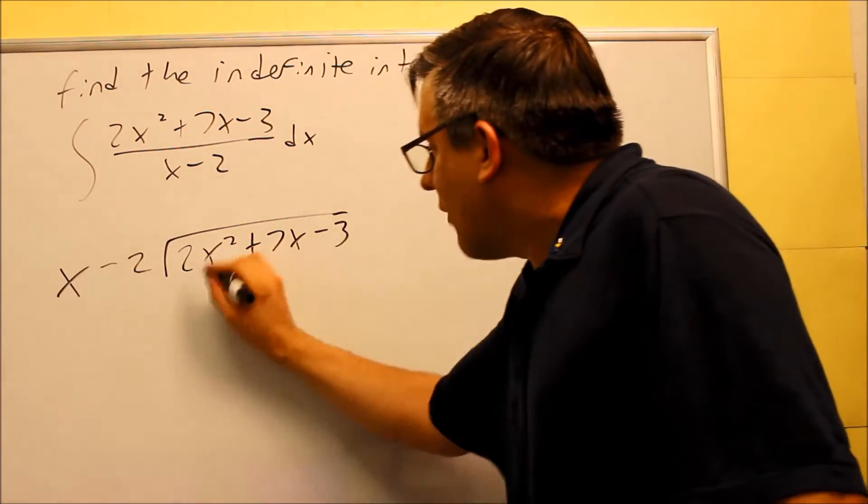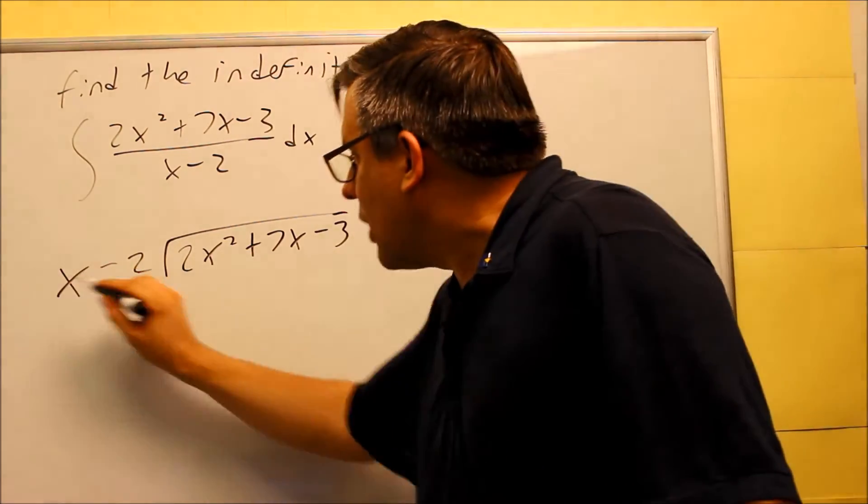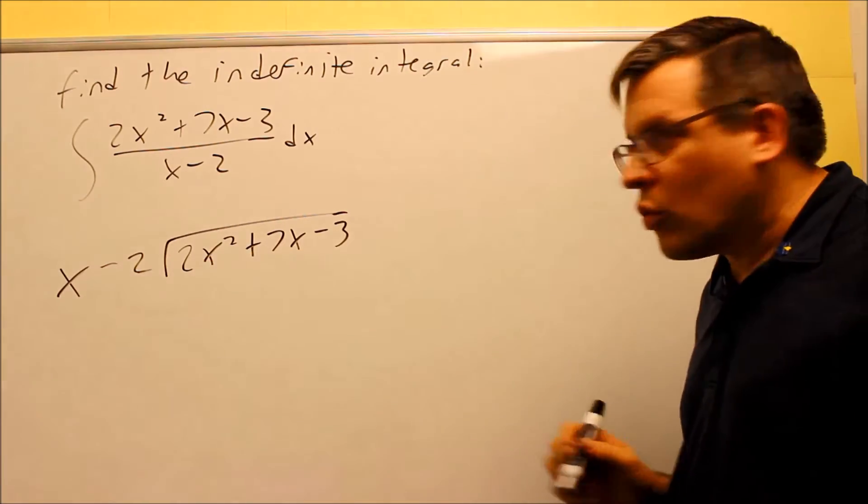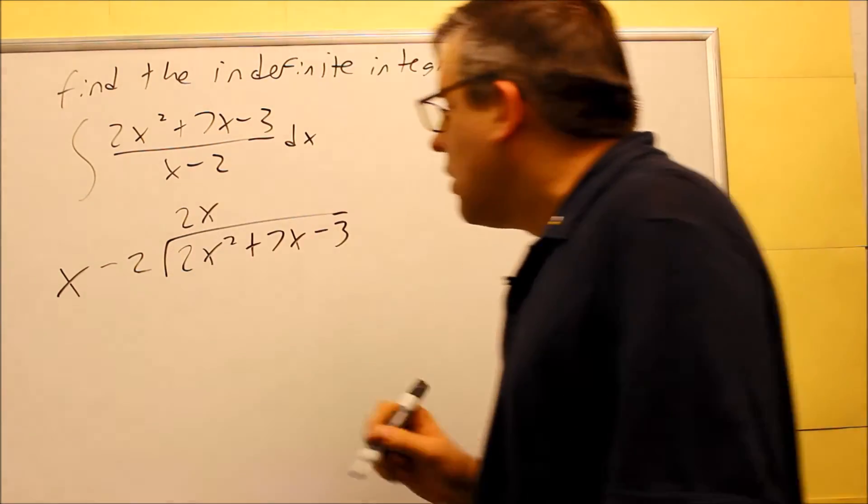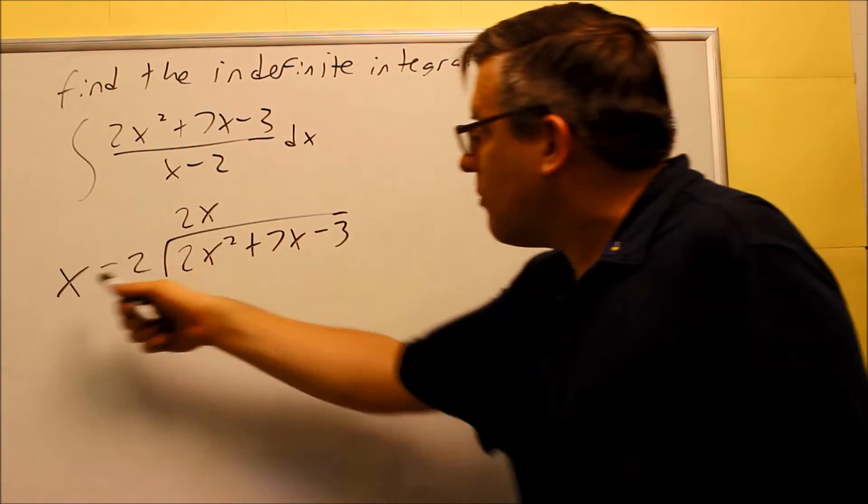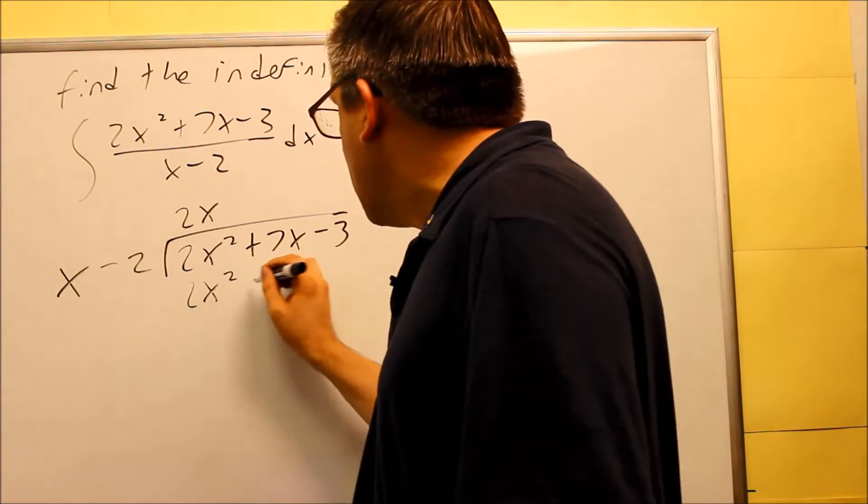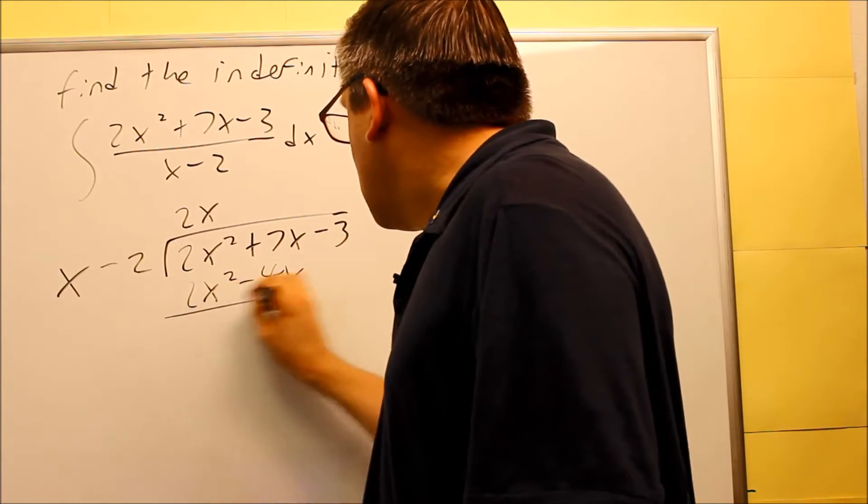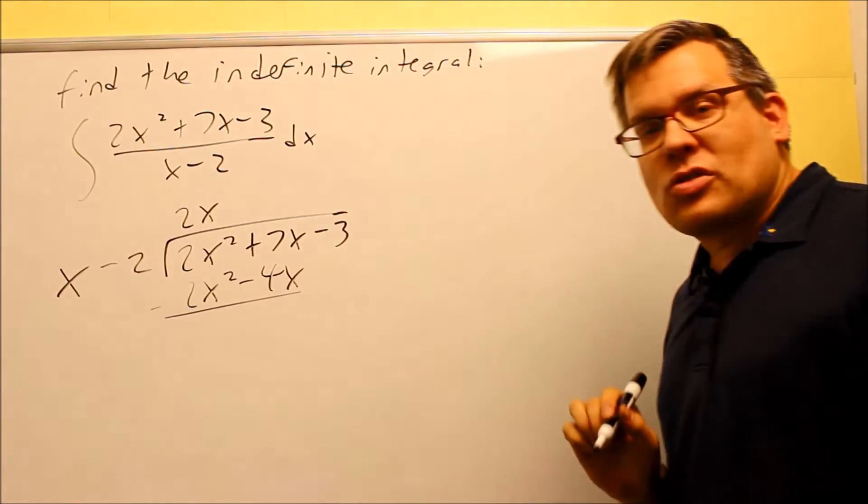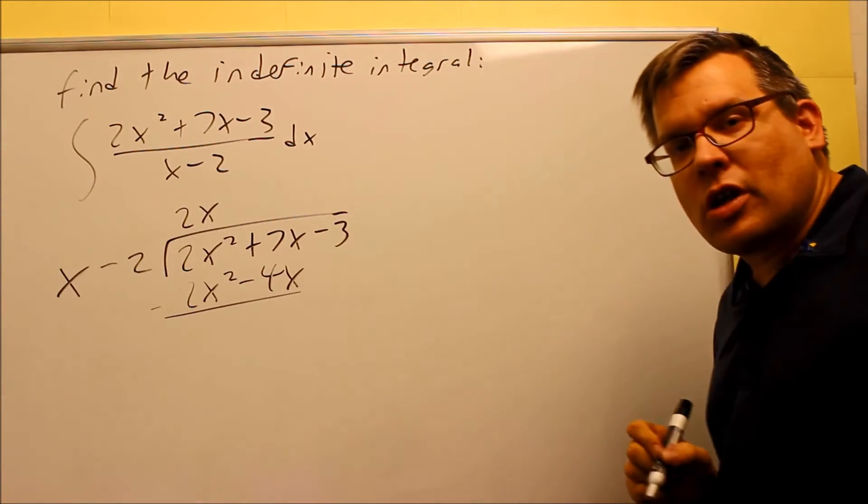x, you want to have it go into 2x squared. You want to ask yourself, what do I have to multiply the x by in order to get 2x squared, and that's going to be a 2x. We're going to multiply that by both things on the outside. So we get 2x squared minus 4x.